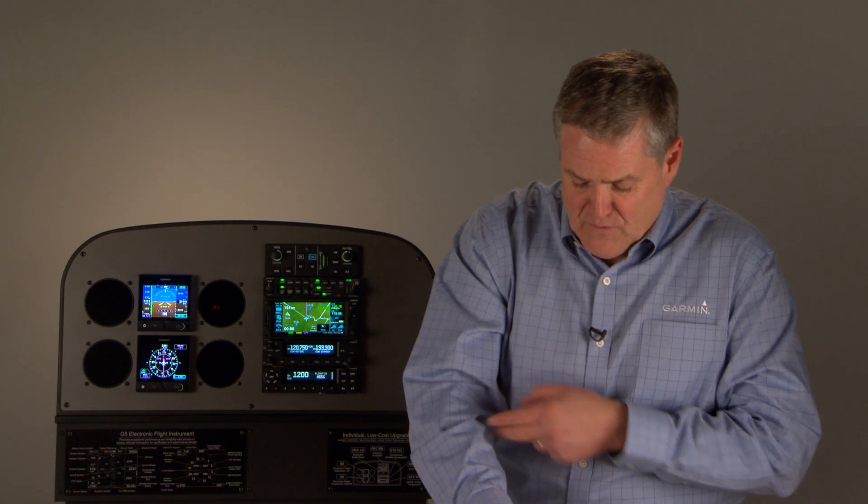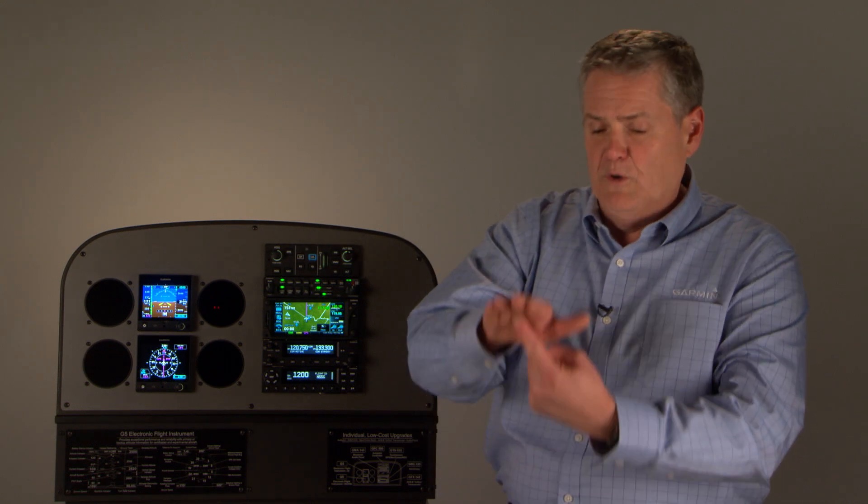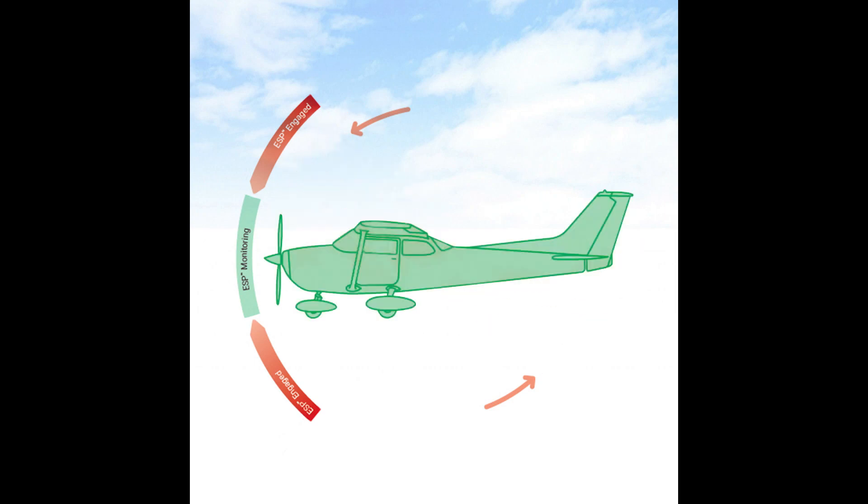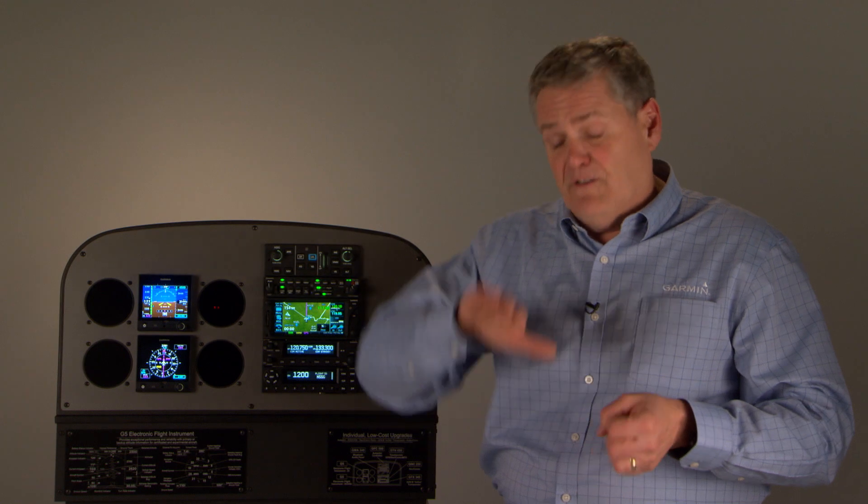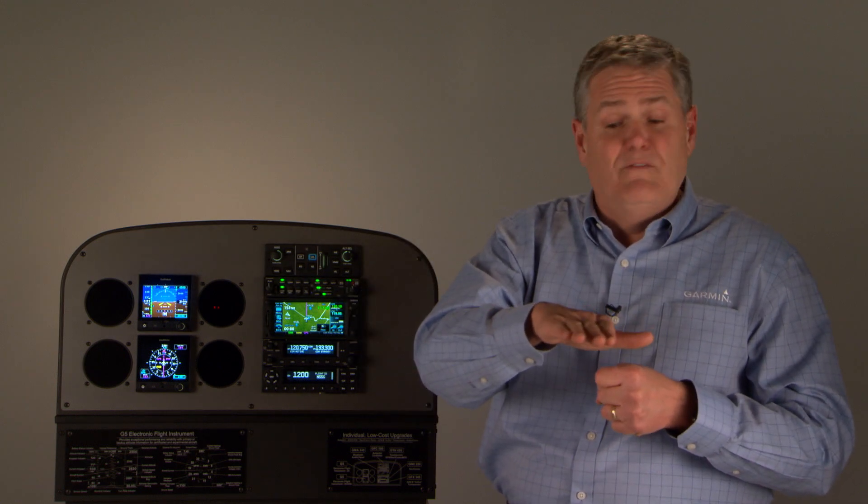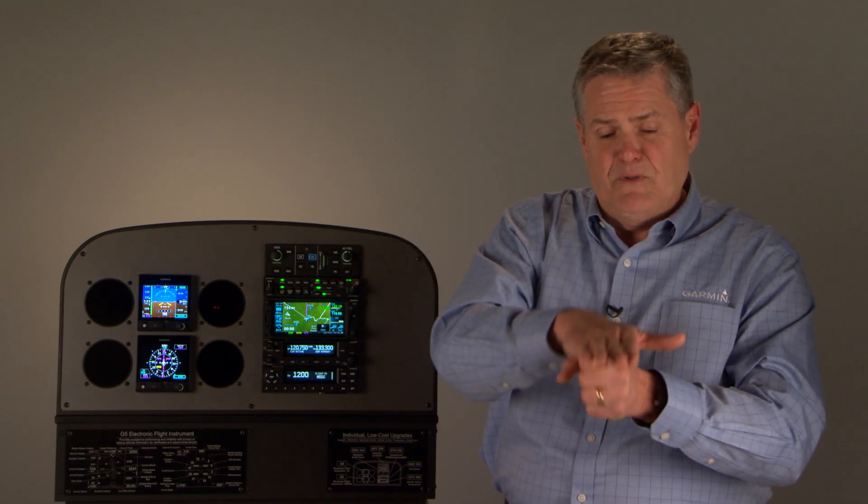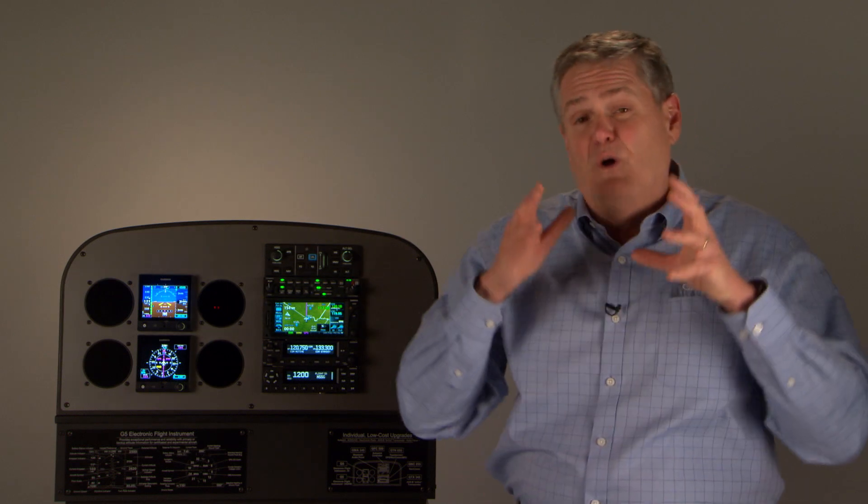You start banking and you get an excessive bank. The servo's going to engage and it's going to give you a little nudge to try to center you up. If the nose is down and you start over-speeding, it's going to give you a little push up. Same thing if you're about to stall the airplane, it's going to give you a little push down. If it doesn't think you're flying the airplane, it's actually going to turn it on in what we call level mode. It's just going to level the aircraft and keep it straight and level. So we are watching out for you in the background.